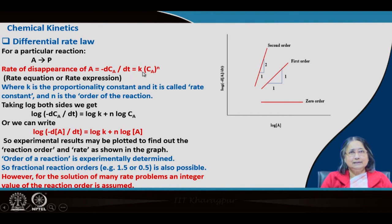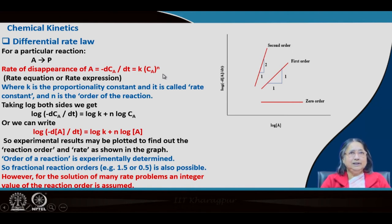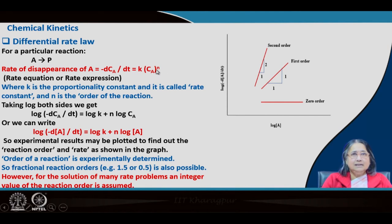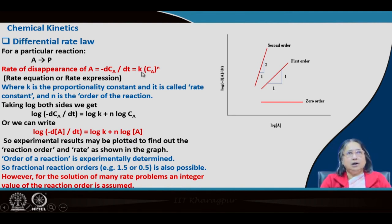The rate is equal to K, the proportionality constant, times CA to the power N. CA is the concentration of A at a particular time t, N is the order of the reaction, and K is a constant called the specific rate constant or rate constant. Like the equilibrium constant, it does not depend on concentration — it depends on temperature. Depending on the order of the reaction, the unit of K will change.